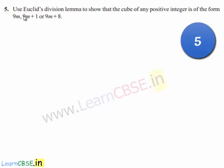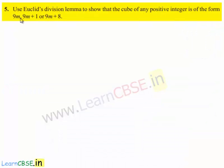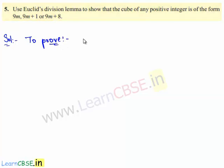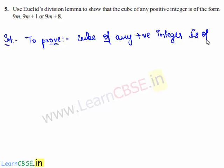Now let us move on to the fifth question. The question is: use Euclid's division lemma to show that the cube of any positive integer is of the form 9m, 9m plus 1, or 9m plus 8.